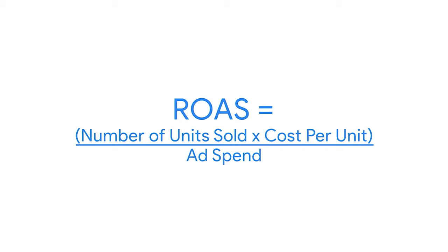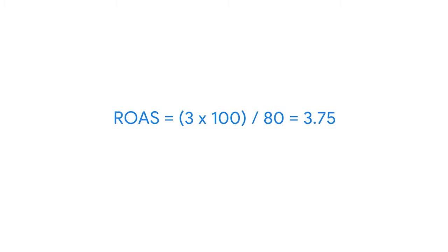ROAS has been referred to as a number, but without an actual value assigned. Here's how to calculate ROAS using a simple example: a business that sells a single product. ROAS can be calculated as the number of products sold times the cost per unit, divided by the ad spend. If it costs $80 in advertising to sell three units of a $100 product, the ROAS is 3.75 — meaning for every dollar spent on advertising, they make $3.75. ROAS is often reported as a ratio (3.75 to 1) or as a percentage (375%).